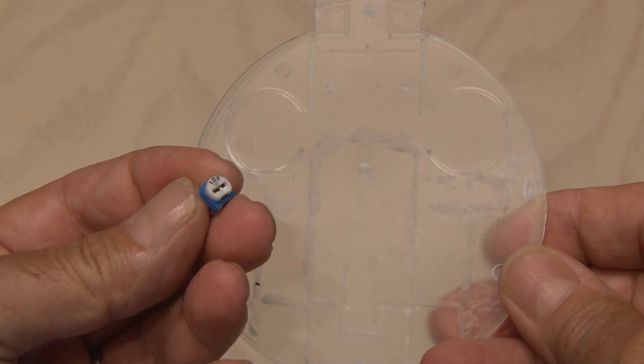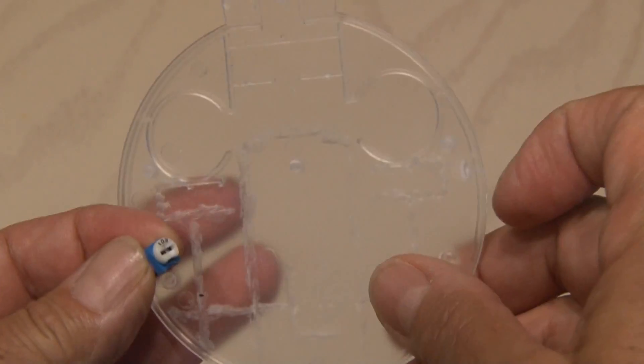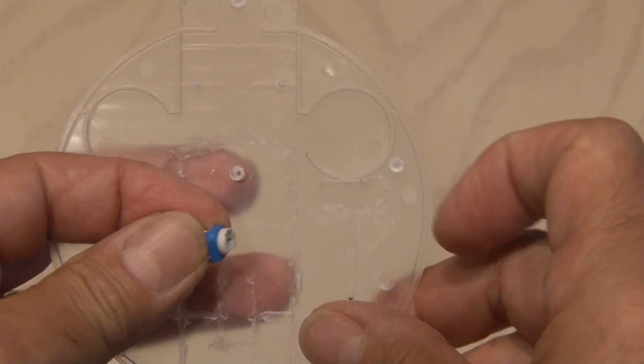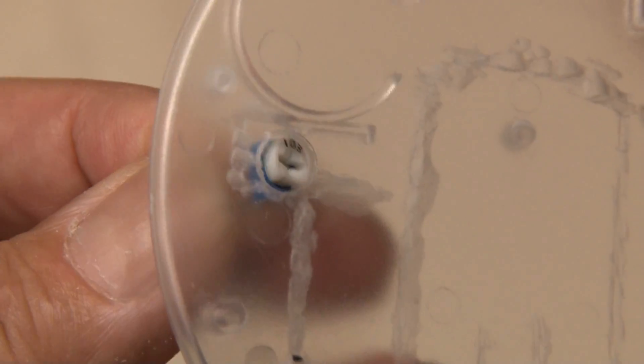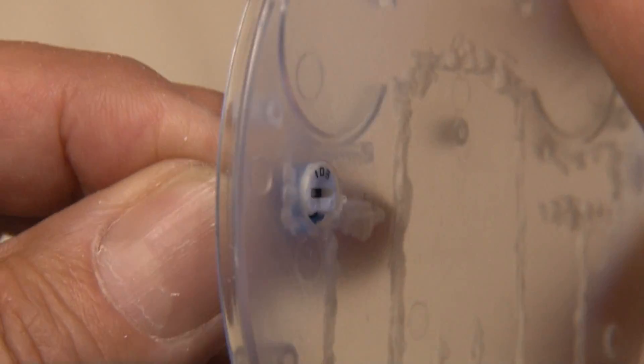We're going to be adding a small 10K adjustable resistor, or potentiometer. So we have to drill a small hole in the bottom of our case. I just used the Dremel to open it up and make it a snug fit for that potentiometer.